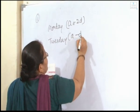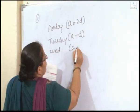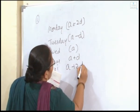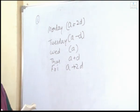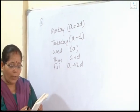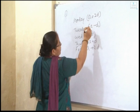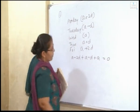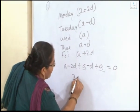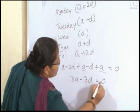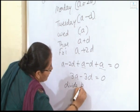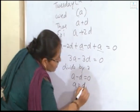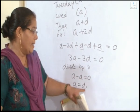Monday A minus 2D, Tuesday A minus D, and Wednesday we will take the term A, Thursday A plus D, and Friday we will take the term A plus 2D. These are our 5 consecutive terms. Then what the question says: the sum of the temperature on Monday, Tuesday and Wednesday is zero. So A minus 2D plus A minus D plus A equals 0. So A, A, A means 3A minus 3D equals 0. If we divide by 3, then we get the equation A minus D equals 0. Means A equals D.